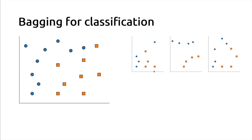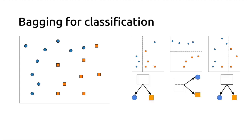For each of those new variations of the training set, we will fit machine learning models independently of one another. For the first training set, we will fit a first decision tree. For the second training set, independently of the first one, we will fit another decision tree. The second decision tree decided to split on the x1 variable with a horizontal split, whereas the first decision tree used a split on the x0 feature. Each time, this is the optimal decision split. With just one split, we could perfectly or almost perfectly classify each variation of the training set.